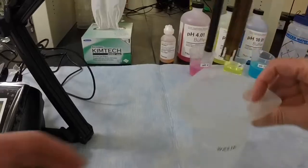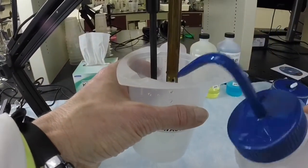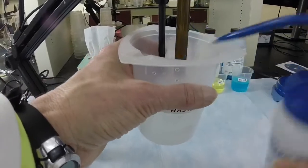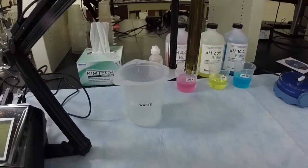Rinse the pH electrode and the mechanical stirrer with DI water from a wash bottle. Then blot briefly and gently with a laboratory wipe.